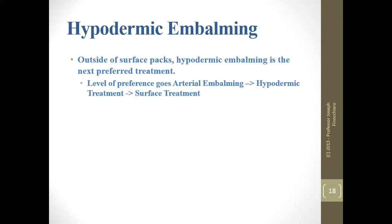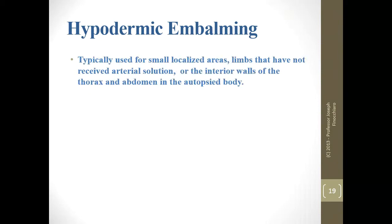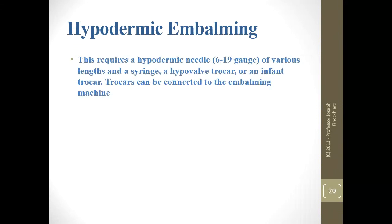Outside of surface packs, hypodermic embalming is the next level of treatment. Typically used for very small localized areas, limbs that have not received arterial solution, or interior walls of the thorax and abdomen — the flaps of the unautopsied body. You need a needle, syringe, hypovalve trocar, or infant trocar. Some of these can be connected to the embalming machine, such as the hypovalve or infant trocar, possibly with a luer lock adapter.